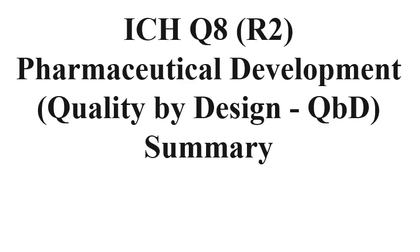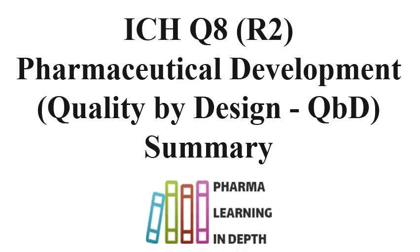The ICH Quality Guidelines series provides guidelines for pharmaceutical quality, covering drug substances and drug products. All these quality guidelines are essential and required to be followed for pharmaceuticals, including the development of drug substances and products. This video is for the ICH Q8 guideline, which is for pharmaceutical development.